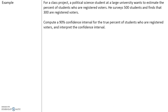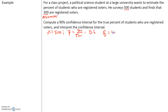Here's another example. For a class project, a political science student at a large university wants to estimate the percent of students who are registered voters. He surveys 500 students and finds that 300 are registered voters. We know that the sample size is 500. Of the 500, 300 are registered voters — that's the number of successes. So p-hat will be 300 over 500, or 0.6. Our q-hat is 1 minus 0.6, or 0.4.